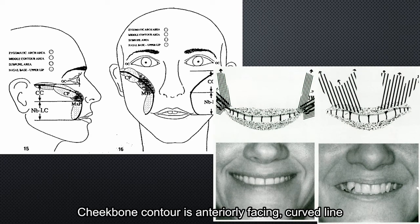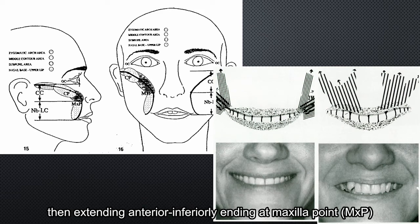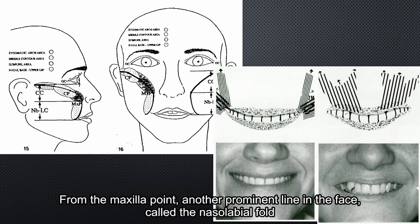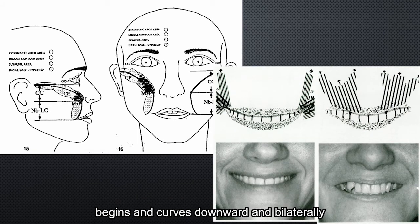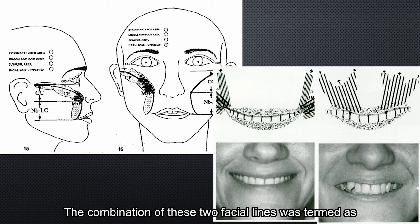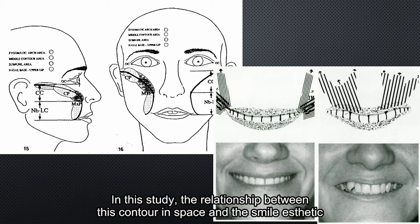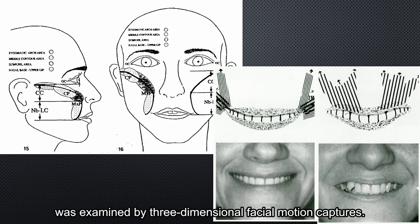The cheekbone contour is an anteriorly facing curved line that starts just anterior to the ear, extending forward with a cheekbone point (CP) that tends anteriorly and inferiorly, ending at the malar point (MSP), tracing to the alar space of the nose. From the malar point, another prominent line in the face called the nasolabial fold begins and curves downward and bilaterally, to be lost finally below and lateral to the oral commissure. The combination of these two facial lines was termed the smile contour or cheekbone-nasolabial contour. In this study, the relationship between this contour in space and the smile target was examined by three-dimensional phase motion capture.